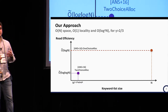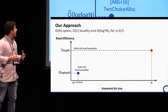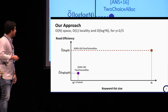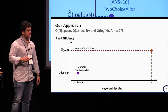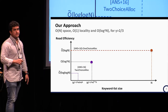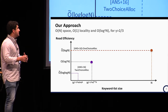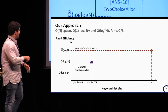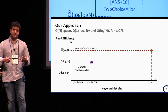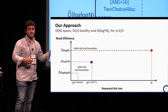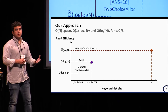Our goal is to provide a generic scheme achieving optimal space, optimal locality, and sub-logarithmic read efficiency across all keyword list sizes. Our first step was to use the analysis of two-choice allocation with parameters set so that it works over a larger range while still achieving sub-logarithmic read efficiency. This is how we handle what we call small keyword lists.